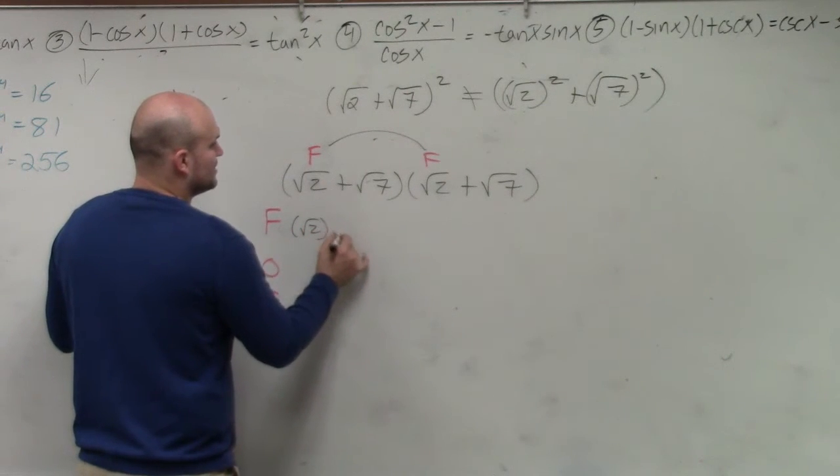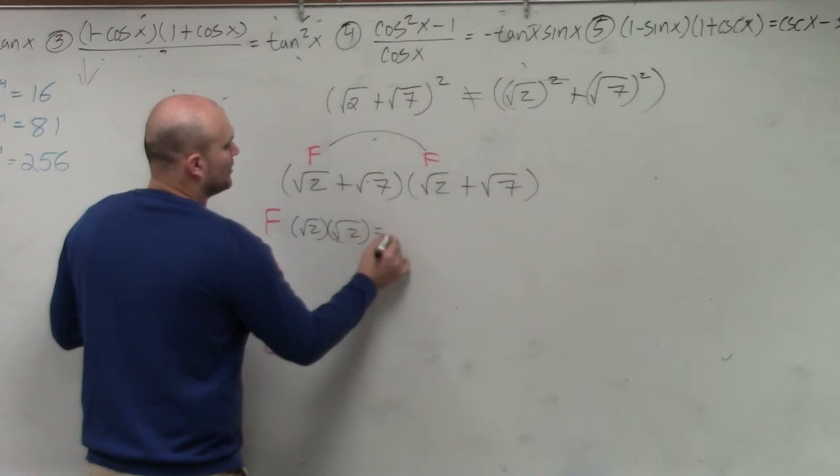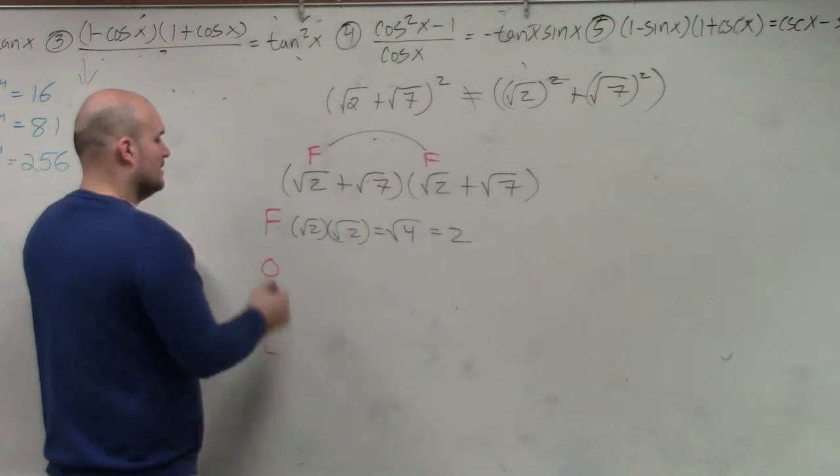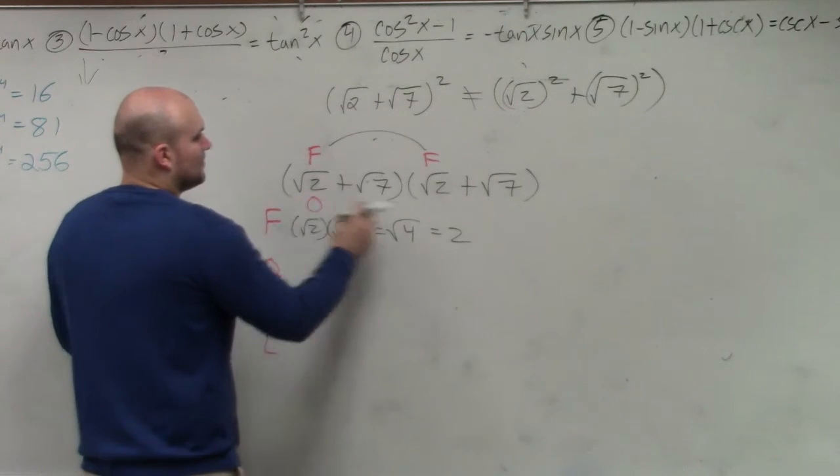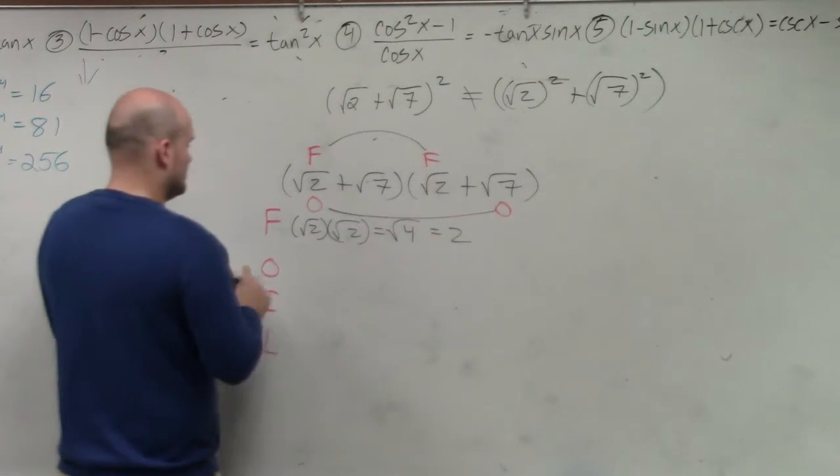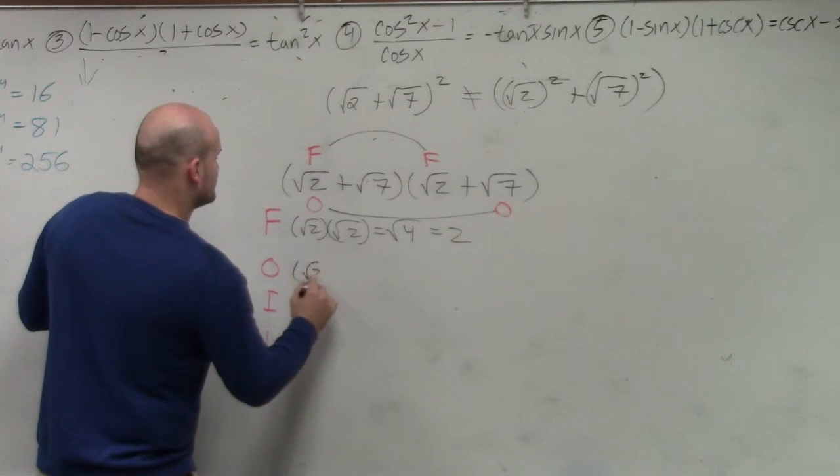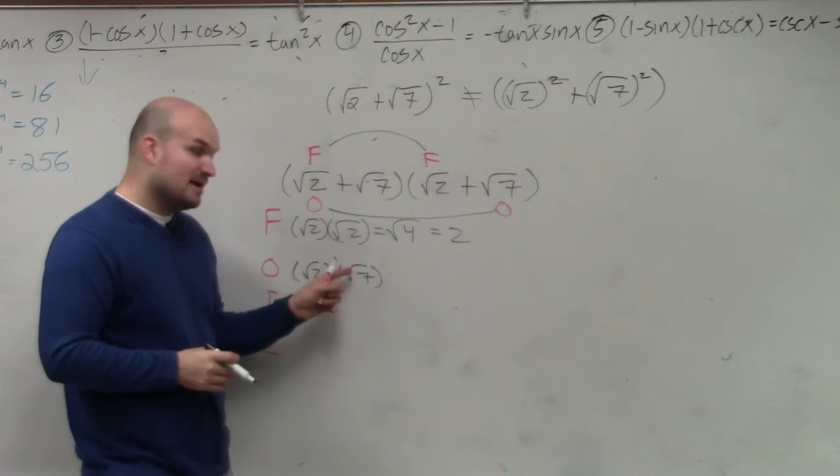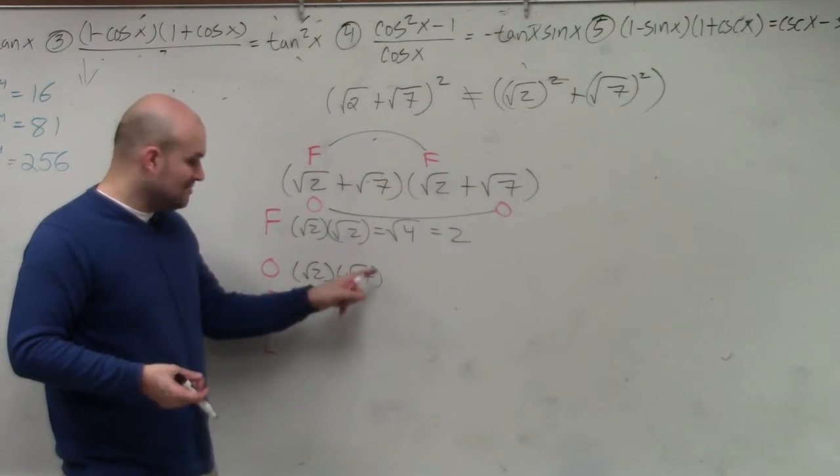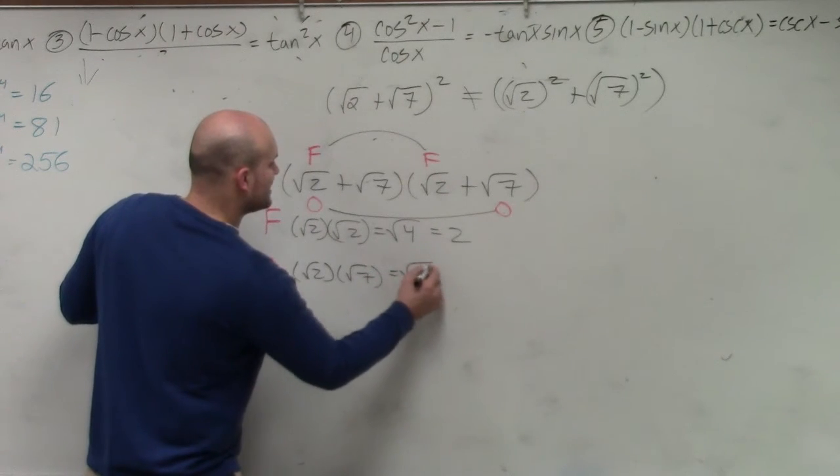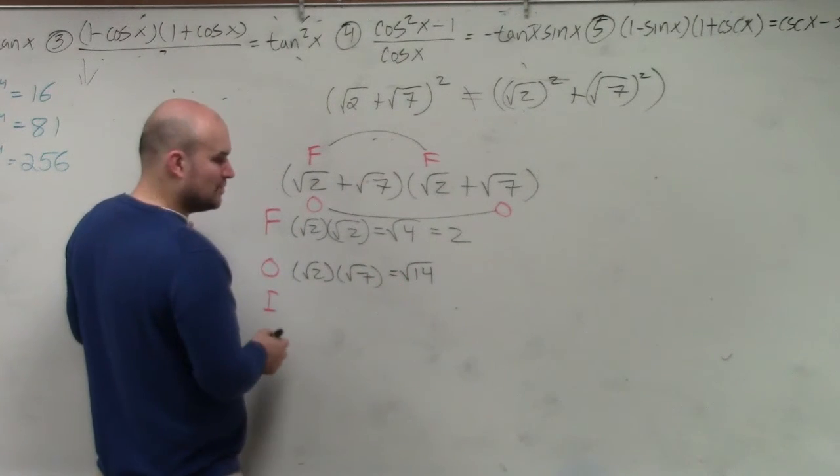We do square root of 2 times the square root of 2. That equals the square root of 4, which is just equal to 2. Then the next one is we do the outer, which is your outer terms. That is square root of 2 times the square root of 7. Since we're multiplying radicals, as long as the index is the same, you just multiply the radicands. So 2 times 7 is 14. I cannot simplify that, so I just leave that as the square root of 14.